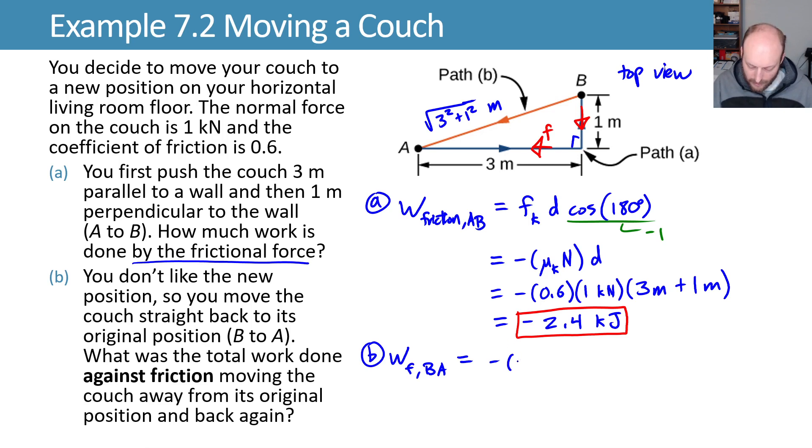Let's plug that in and say that'll be 0.6 as our mu K. The normal force is still the kilonewton. And now the distance, instead of what it was before, will be the square root of 3 squared plus 1 squared. So that's the square root of 10 in meters, which gives us a work done by friction for the second leg of negative 1.9 kilojoules.